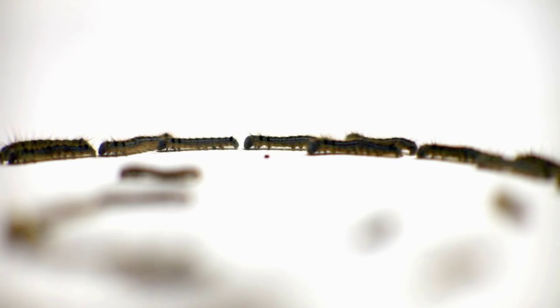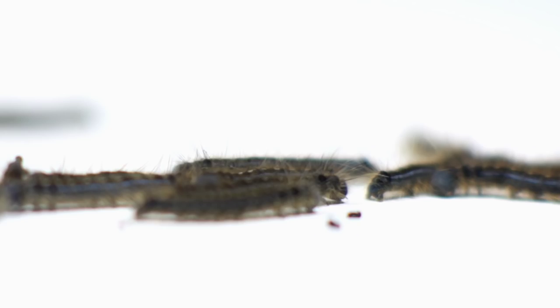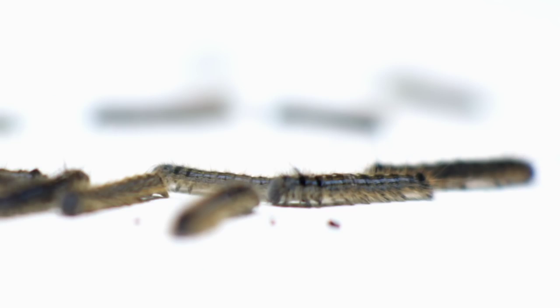Forest Tent caterpillars emerge as moths with non-functional mouths. This means that as caterpillars they are constantly eating in order to sustain their journey from caterpillar to cocoon to moth.